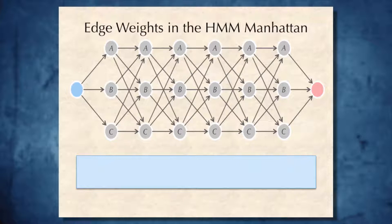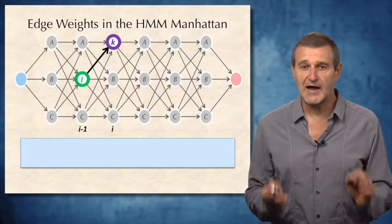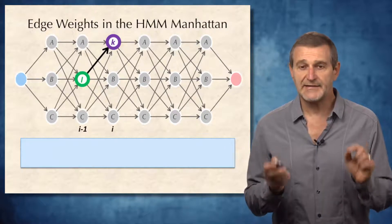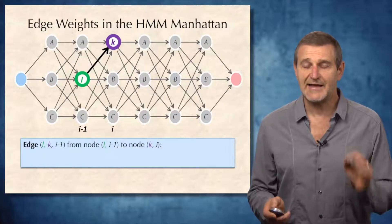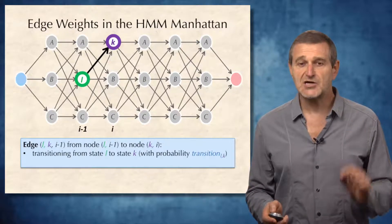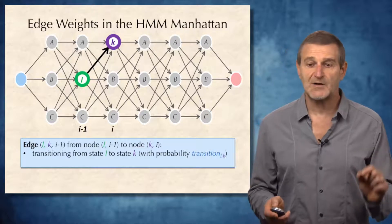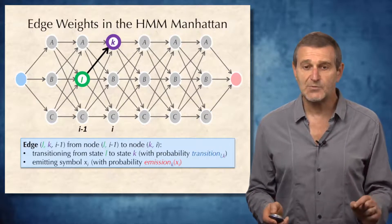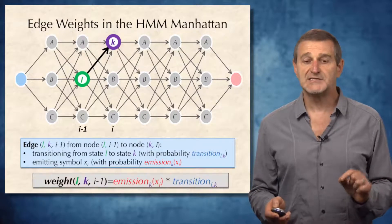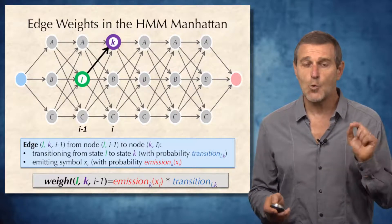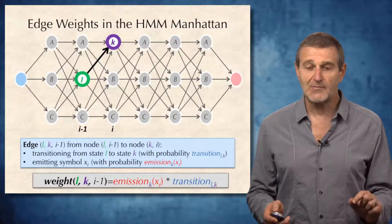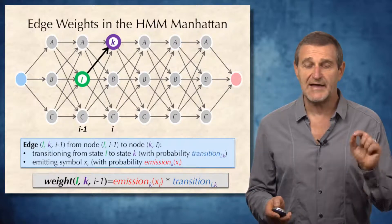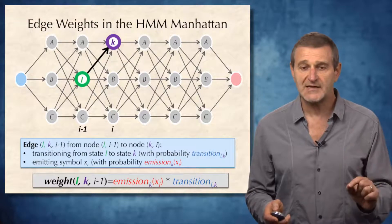We now need to define the weights of edges in the newly built Manhattan graph for an HMM. Let's consider an edge that starts in column i in state L and connects it to the node corresponding to state K in column i. This edge corresponds to transitioning from state L to state K, and also to emitting the symbol Xi from state K. Therefore, we define the weight of this edge as the product of the emission probability of emitting symbol Xi from state K multiplied by the transition probability from state L to state K.